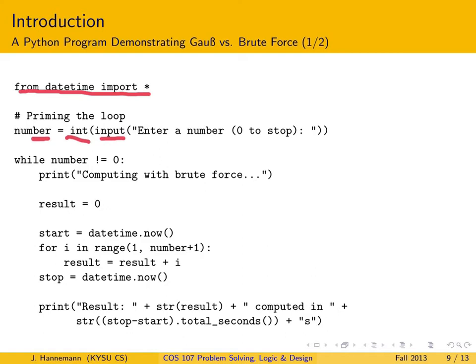What the computer returns at that point is not an actual number the computer can work with, but just a string of characters — the characters '1', '0', and '0'. The computer needs to convert this to an actual number before it can do arithmetic with it. This is what the int() does here — it takes the string and converts it to an actual number, then assigns that number to a variable we call 'number'. Indentation in Python is significant and different from almost any other programming language.